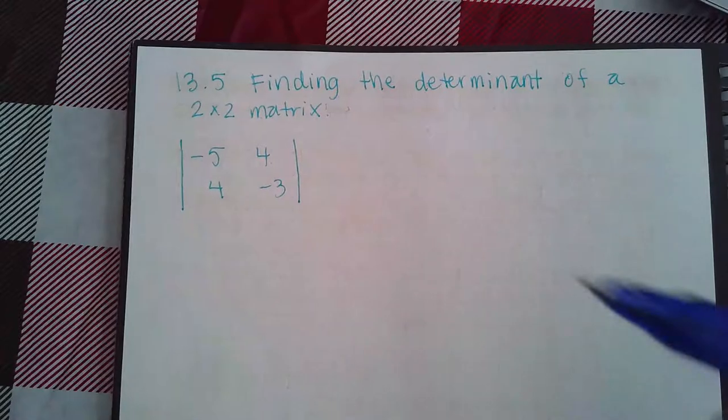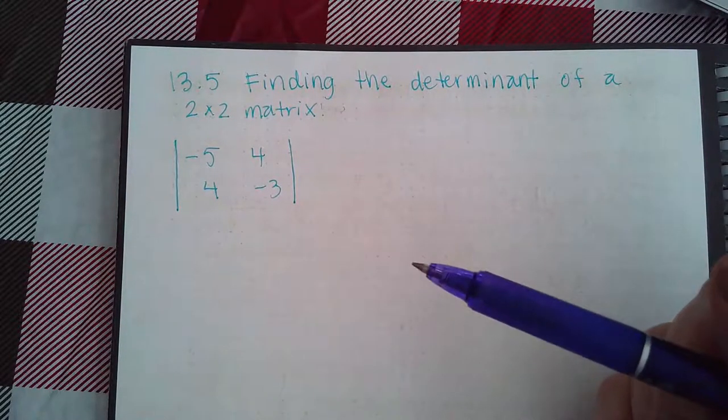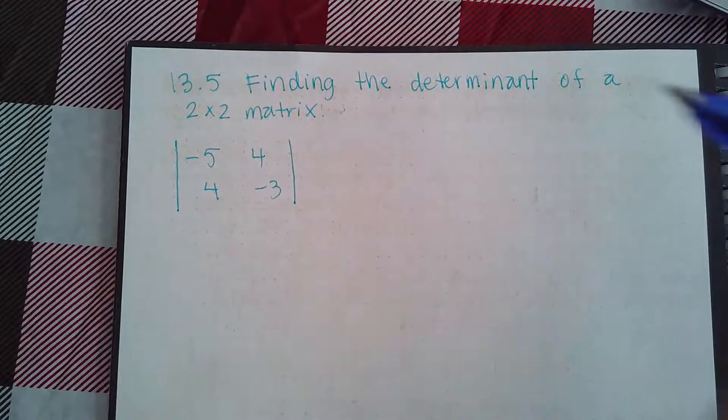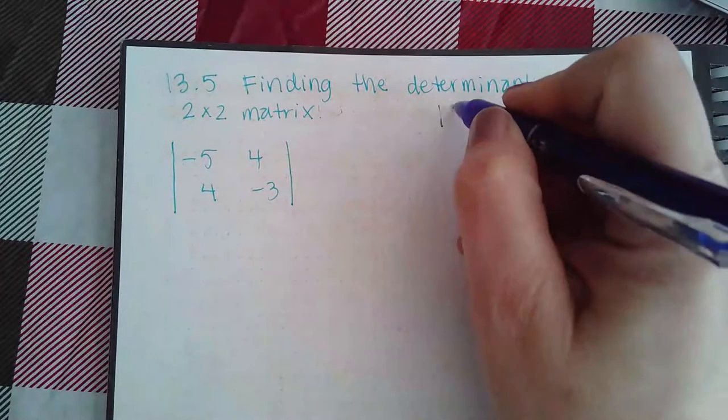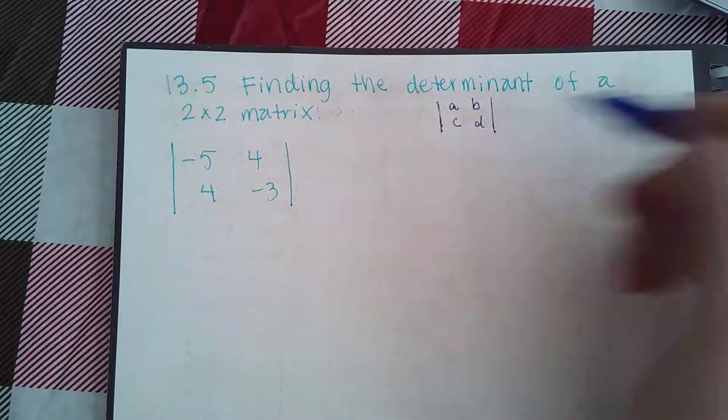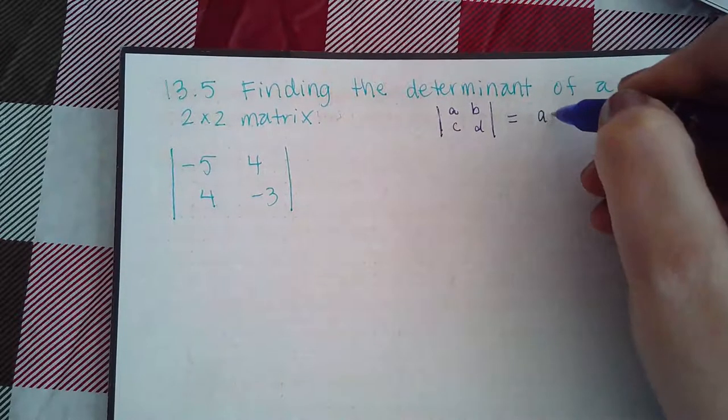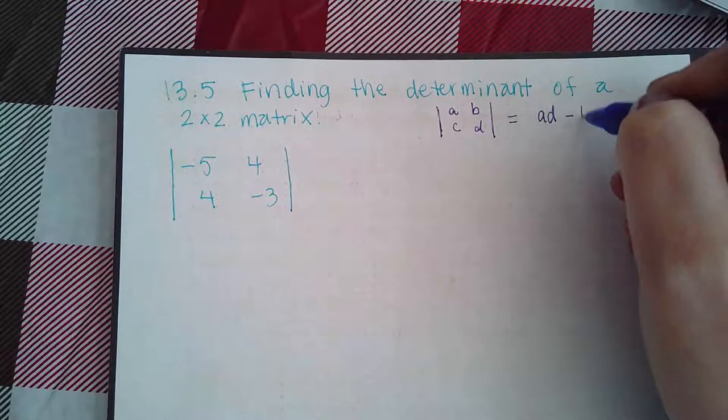Now, here's how the determinant for a 2 by 2 matrix works. What you're going to need to do is if you have a matrix, and I put all of these people in their respective positions, the determinant is AD minus BC.